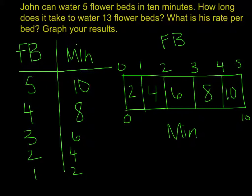Okay, so the question was here, John can water 5 flower beds in 10 minutes. How long does it take to water 13 flower beds? And what is his rate per bed? Graph your results. So as I'm looking, I've already done the work here. I did set up a table of equivalent ratios right here. And I have my flower beds, I have minutes. I've put in the original data here. I set up a tape diagram here to get me started. And I also put in some information. What I don't know is how long it's going to take me to water 13 flower beds. And I also haven't graphed that information.